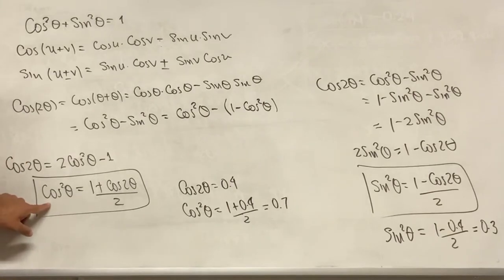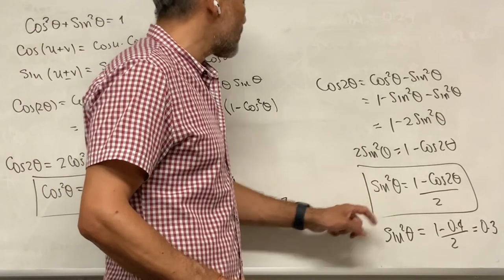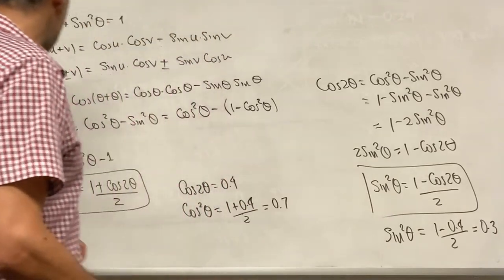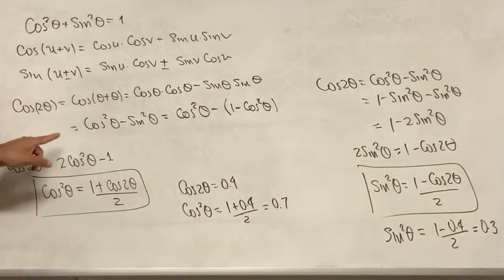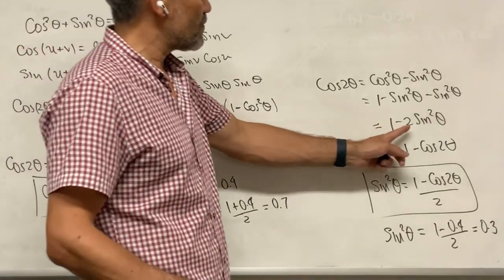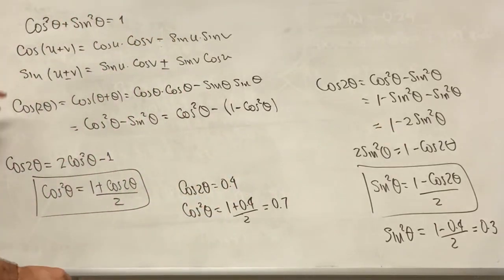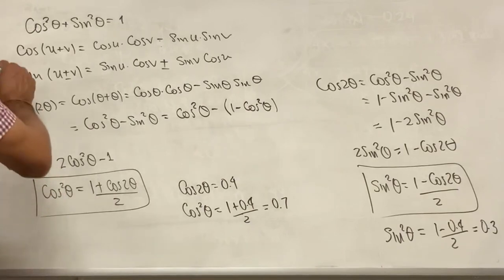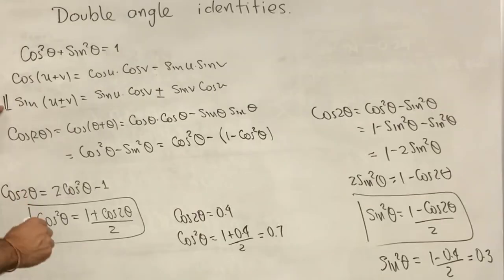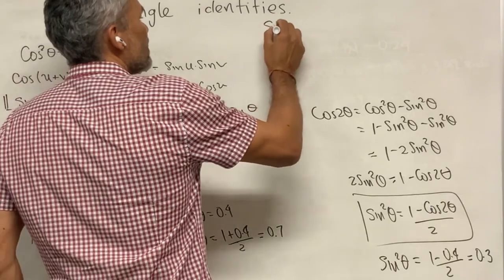Then we have these two identities: one for cosine squared of theta, another one for sine squared of theta. And we also have an expression for cosine of 2 theta that can be written in terms of sine squared of theta or cosine squared of theta. We can also use this identity to find sine of 2 theta.